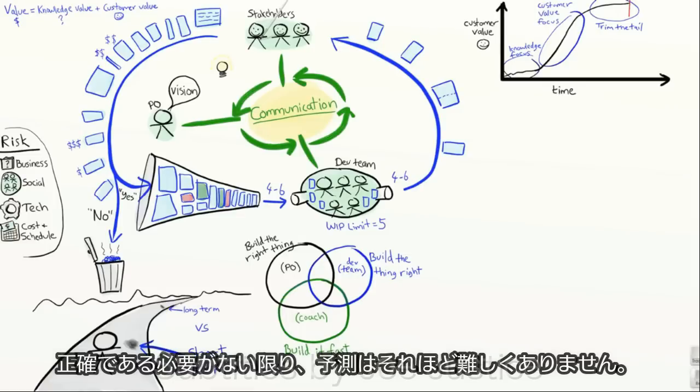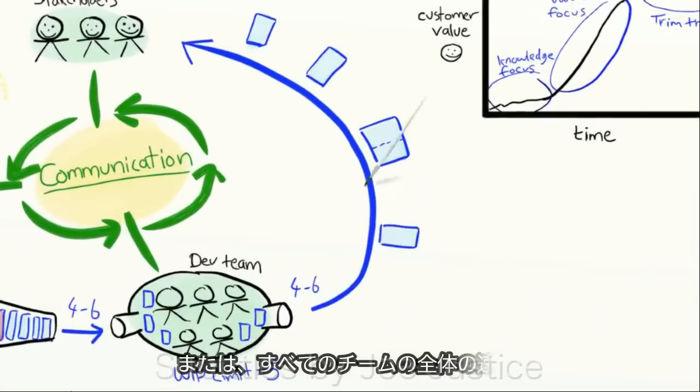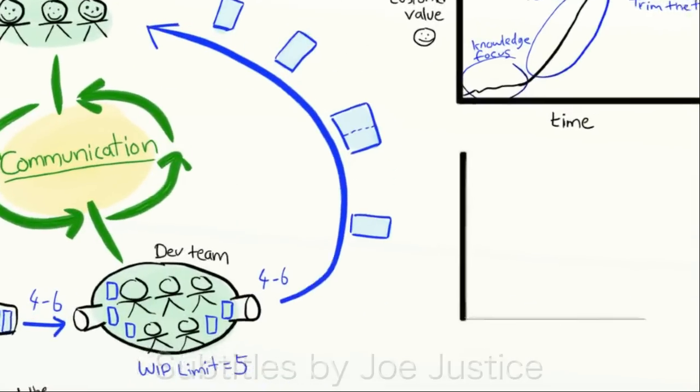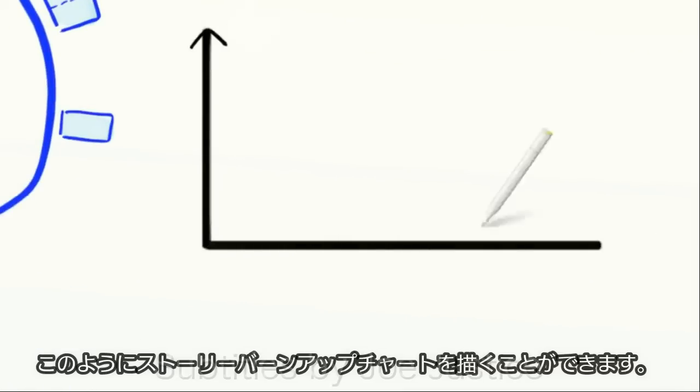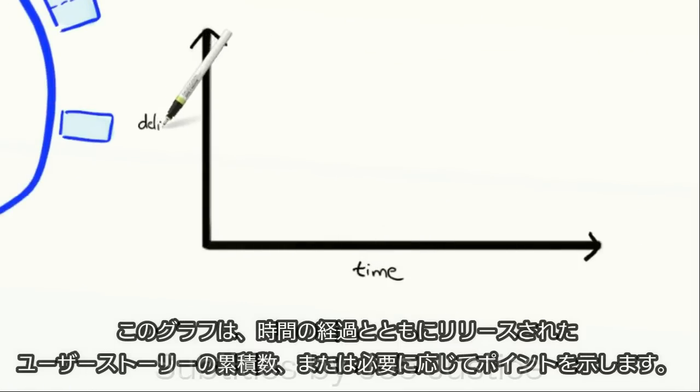It's not really that hard to make a forecast as long as it doesn't have to be exact. If you measure the velocity of your team or the combined velocity of all your teams, you can draw a story burn-up chart like this. This chart shows the cumulative number of stories delivered over time, or story points if you prefer.